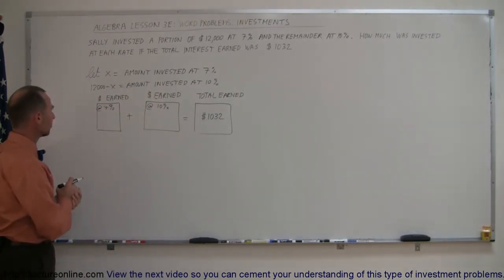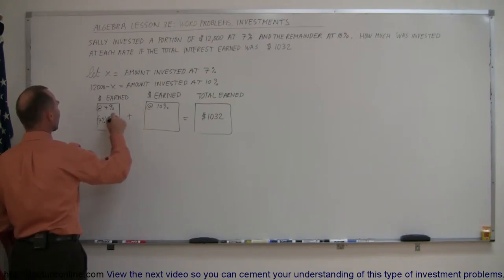And how do you calculate the amount of money earned at 7%? We multiply the interest rate - the rate of return, 7% - times the amount invested at that rate, which is x.